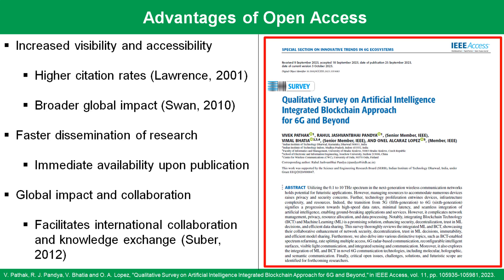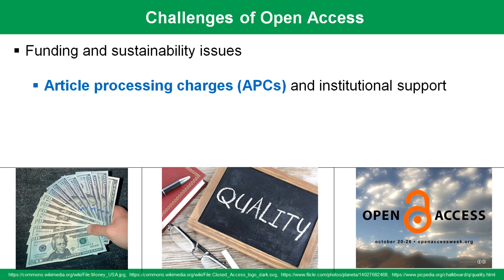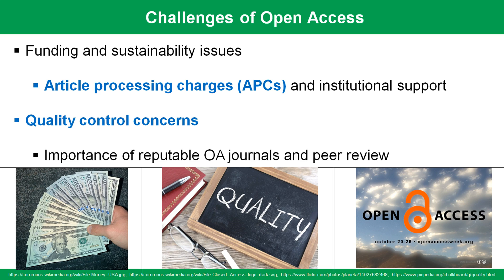This is an example of an open access article which we published recently in a prestigious journal. While open access brings numerous benefits, challenges persist. Funding and sustainability issues are key concerns, with authors often facing article processing charges to publish in open access journals. This raises questions about the financial burden on researchers and institutions. Quality control is another challenge. The perception that open access journals may have lower editorial standards has promoted the need for robust peer review processes and the identification of reputed open access journals. Additionally, the rise of predatory publishing, characterized by deceptive practices, underscores the importance of vigilance in choosing the right open access outlets.